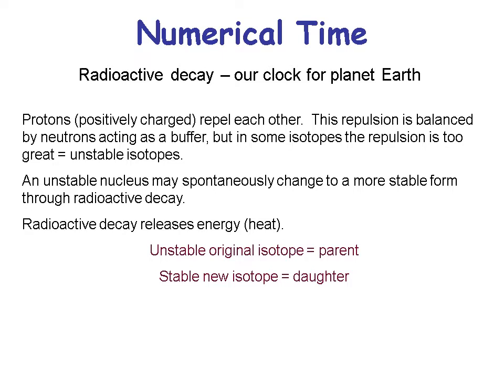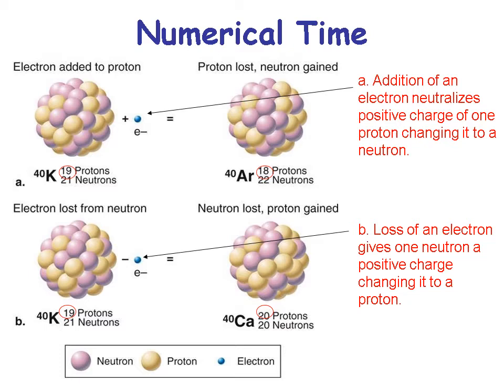When we talk about radioactive decay, we think about a parent — the original unstable isotope — and a daughter, which is the more stable new product after decay. Using potassium as an example: an electron added to a proton neutralizes its positive charge, changing it to a neutron. Or the loss of an electron gives a neutron a positive charge, changing it to a proton. So we have electrons added to protons, protons lost, neutrons gained, or neutrons lost and protons gained.